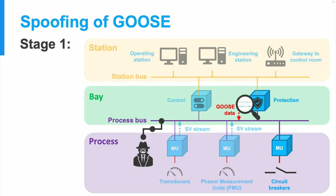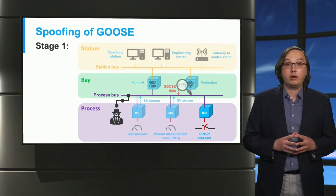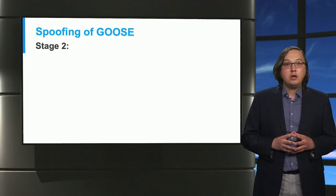For instance, they might capture GOOSE data frames and inspect how those are structured. Then they can use this knowledge to craft a malicious GOOSE packet by changing the status of the circuit breaker and opening it. So how do they do this?